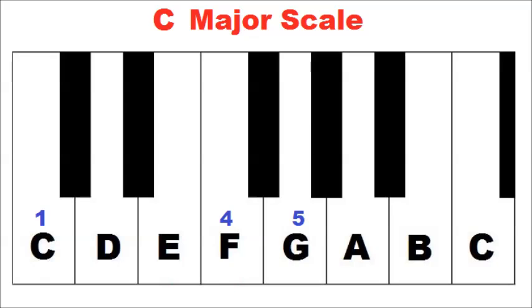The notes of the C major scale are C, D, E, F, G, A, and B. Notes 1, 4, and 5 are C, F, and G, respectively.